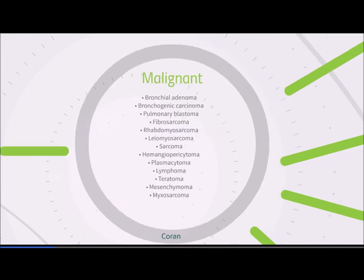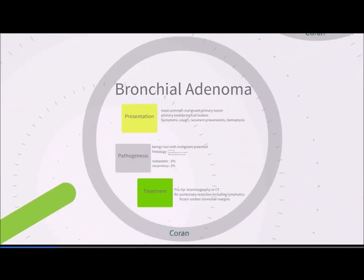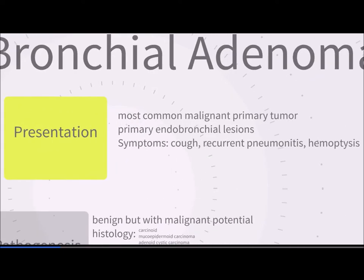Moving to malignant tumors — bronchial adenomas are the most common malignant primary pulmonary tumor. They are primarily endobronchial lesions, so patients present with symptoms of near-bronchial obstruction such as cough, recurrent pneumonitis, and hemoptysis. Most lung lesions present with nonspecific, vague symptoms like recurrent lung infections and persistent cough. For this reason, diagnosis can often be delayed by months to years, with patients instead being treated for lung infections or asthma.